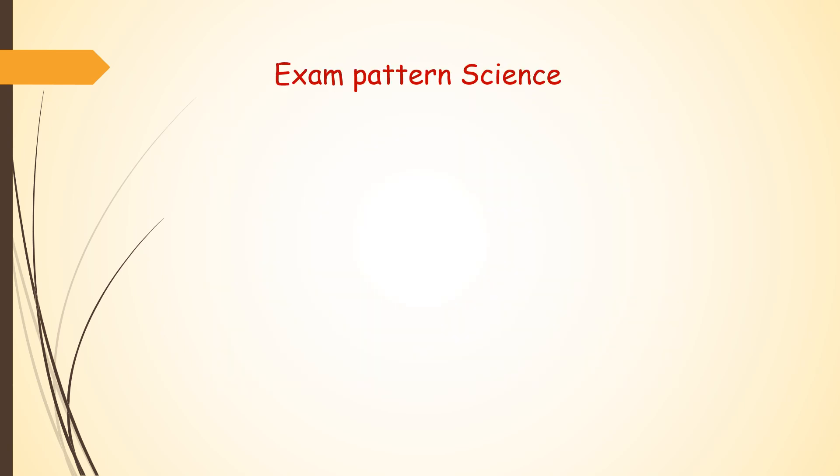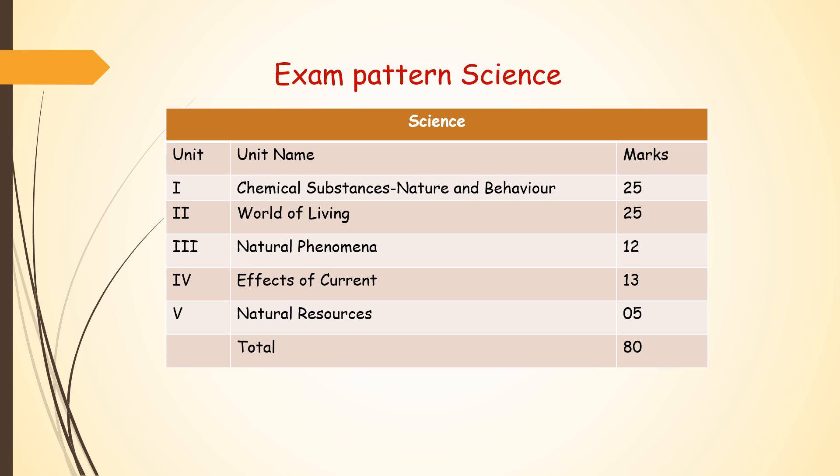Here is the exam pattern for science. The entire science is divided into five parts. The first unit is chemical substances, nature and behavior - it will be for 25 marks, this is generally chemistry part. Then world of living, this is biology chapters, 25 marks. Natural phenomena is for 12 marks - that is refraction, reflection, etc. Effects of current is for 13 marks. So this third and fourth unit stands for physics part, that is for 25 marks. In all, chemistry, biology, and physics will constitute 75 marks paper. And last five marks will be there for environmental science - natural resources will be asked for five marks.